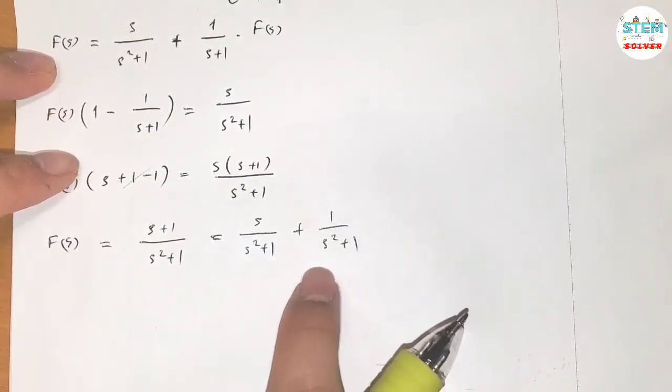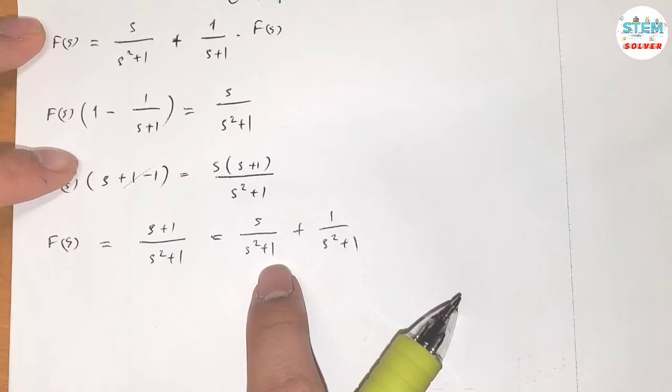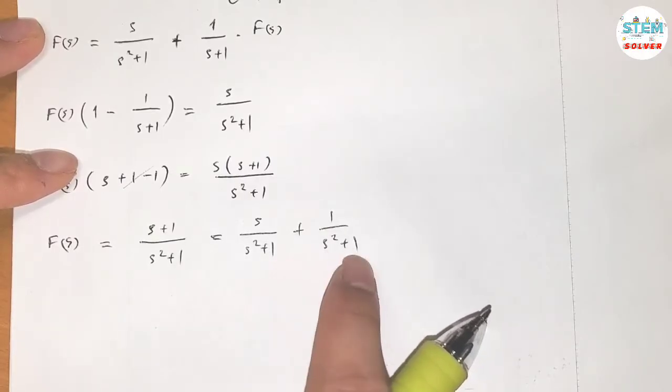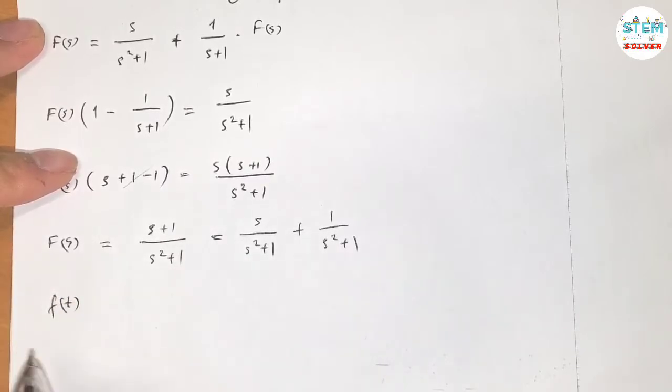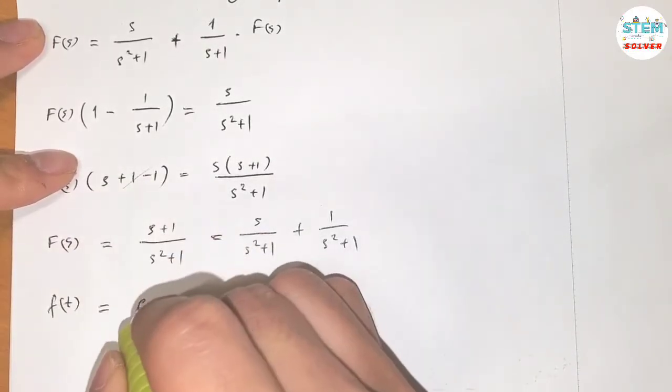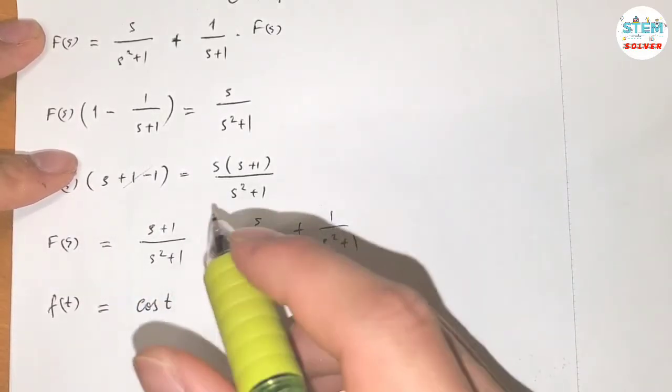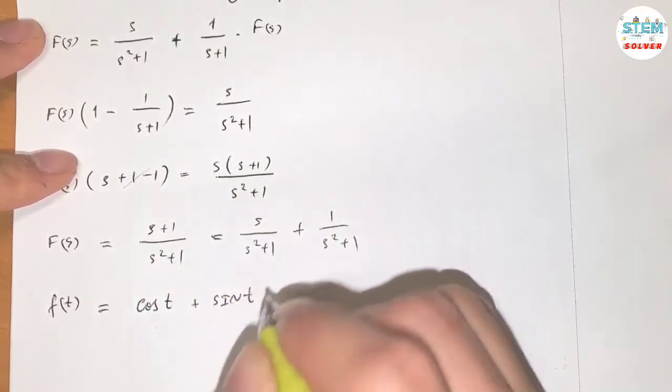At this point, you can see that these are already in the form of the Laplace transform form. So the final step is to take the inverse of both sides, so I have f of t equals. The inverse of this is just cosine t and the inverse of this is just sine t.